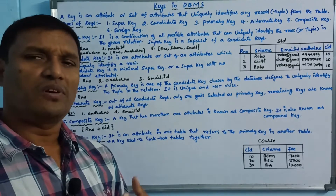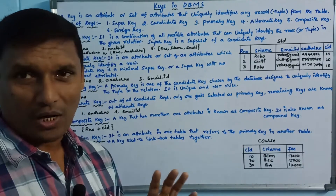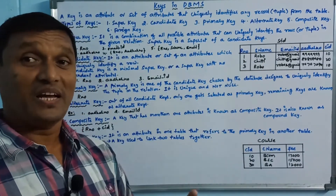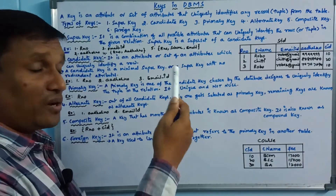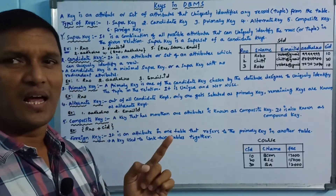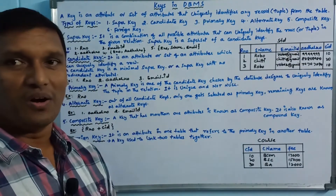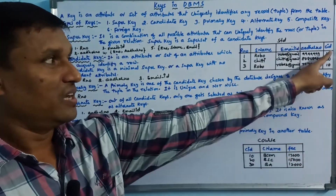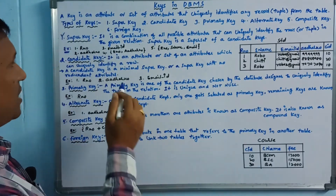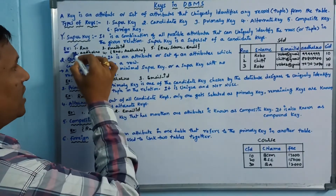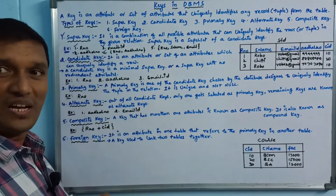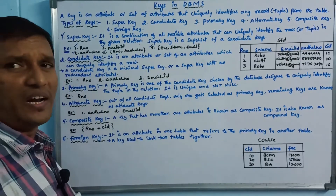For example, the name 'Rhobo' appears twice — rule number 1 is Rhobo, rule number 2 is also Rhobo. So the name alone cannot uniquely identify a record. Rule number alone is unique. Email ID is also unique. Aadhar card number is also unique. Course ID repeats (10, 20, 20), so it is not unique alone. Various combinations of these attributes form possible super keys.